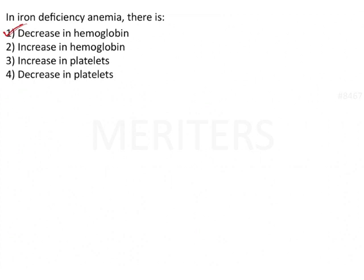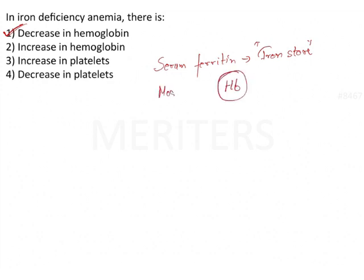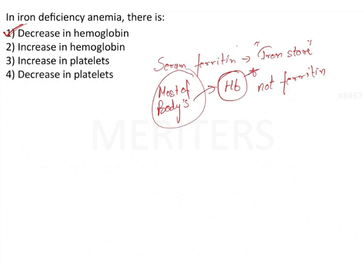There is something called serum ferritin, and this serum ferritin is the indicator of the body's iron store. Generally in exams they ask about ferritin as the iron store of the body. Most of the body's iron is contained in hemoglobin, not in ferritin. Although the storage form of iron is ferritin, serum ferritin generally tells you about the iron store.